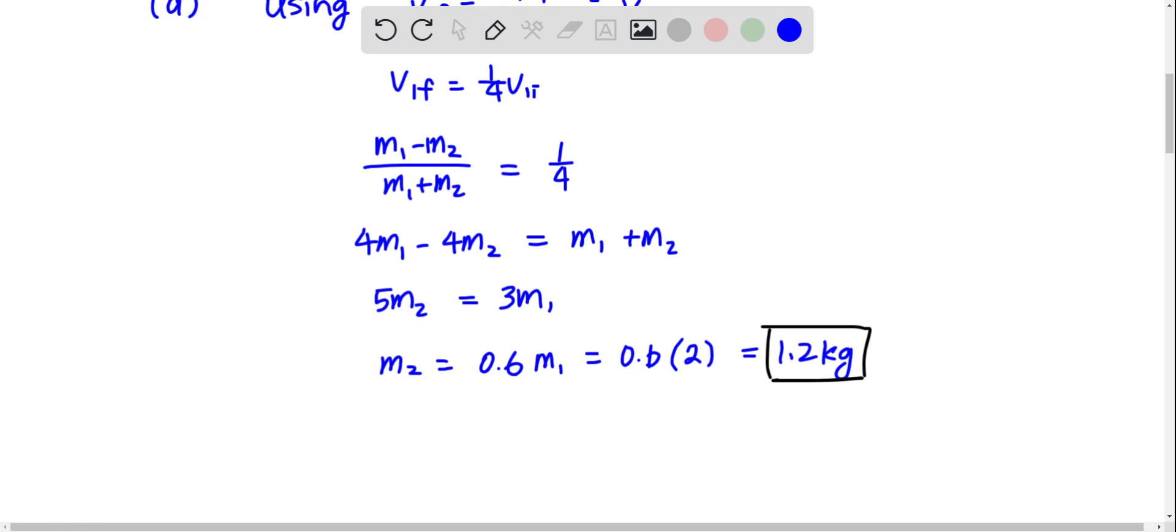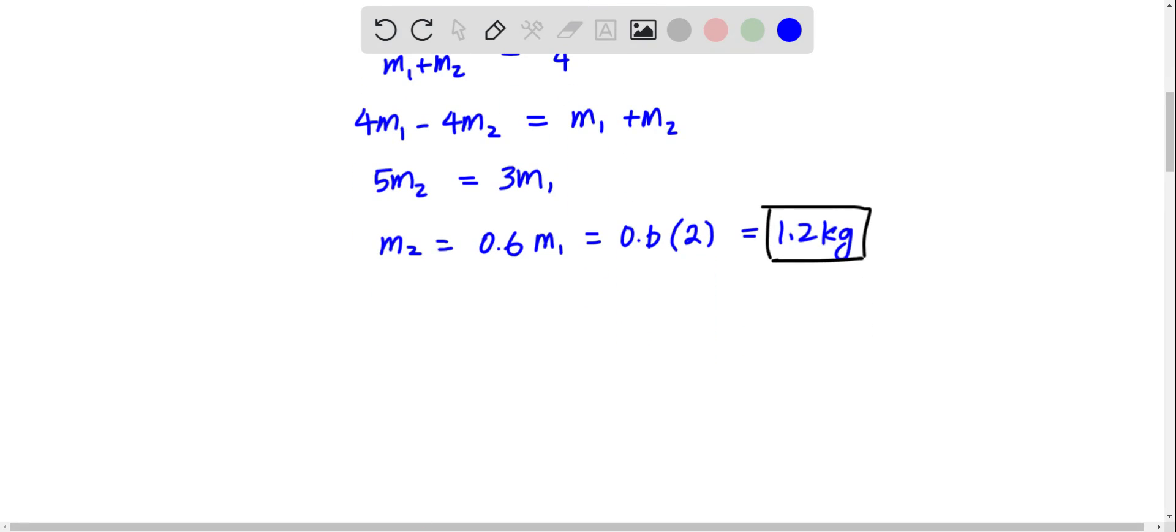Then in part B, we want to find the Vcm if the initial speed of the 2 kg body was 4 meters per second. We will be using the formula Vcm equals 1 over the total mass times the sum of Mi Vi.